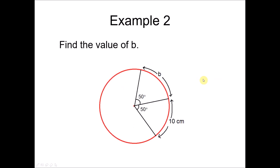Example 2: find the value of b. When the angles subtended by the two arc lengths are the same — 50 and 50 — this means the arc lengths have the same value. Hence b equals 10 cm.